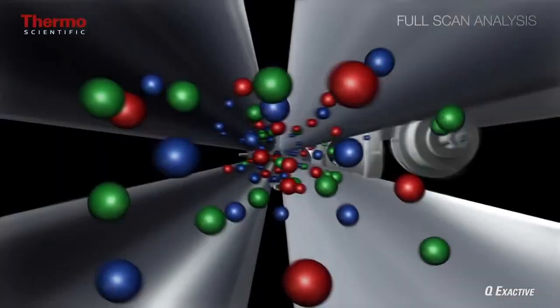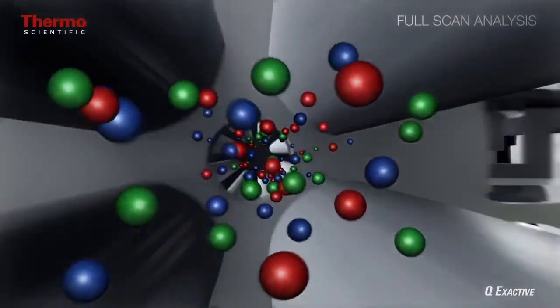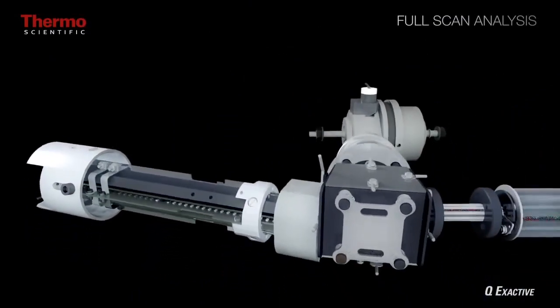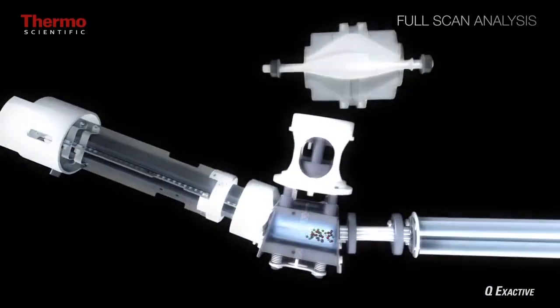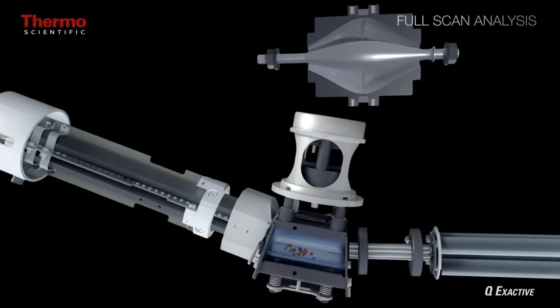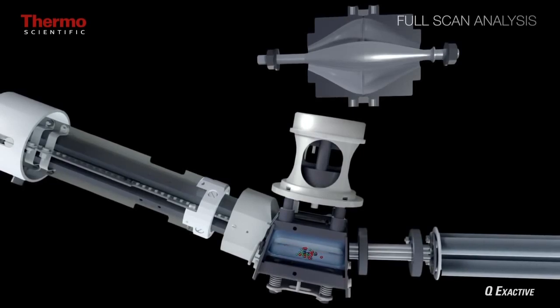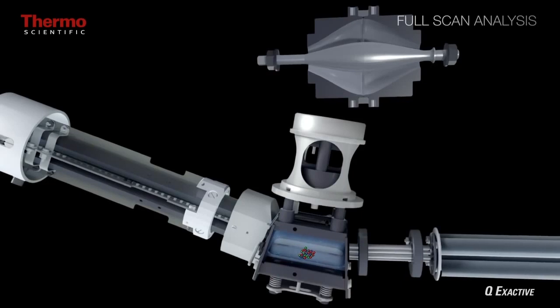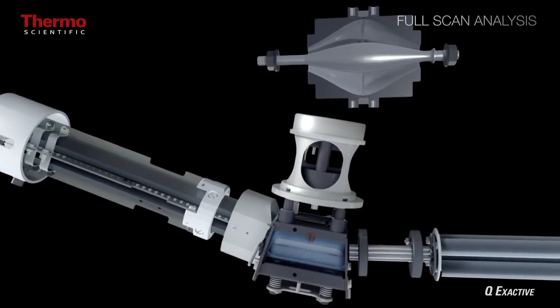And since this is a full scan MS1 analysis, all ions are passed through the quadrupole, collected into packets in the C-trap, stabilized, and sent to the orbitrap for detection.